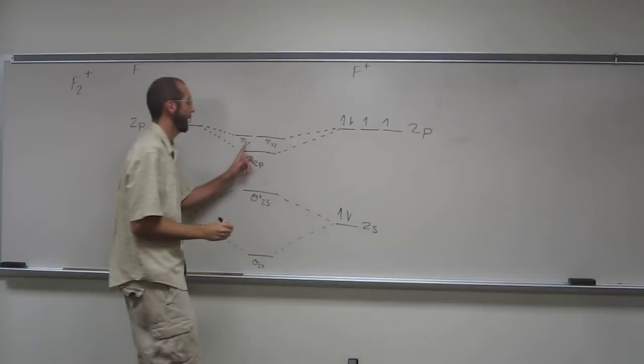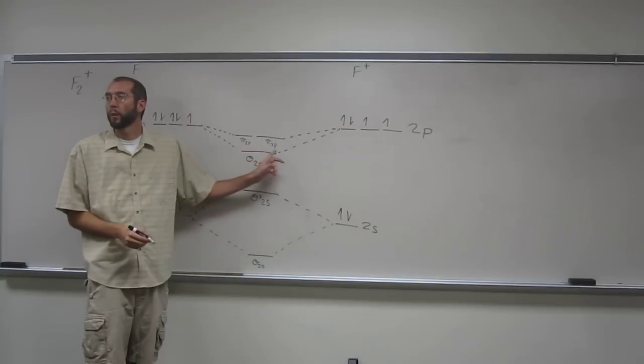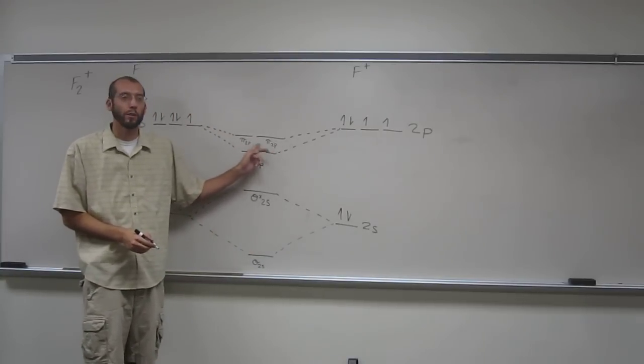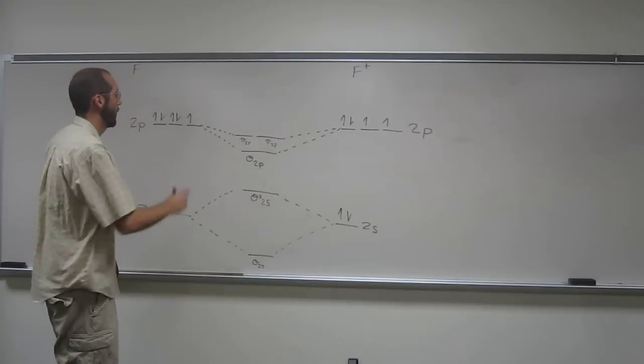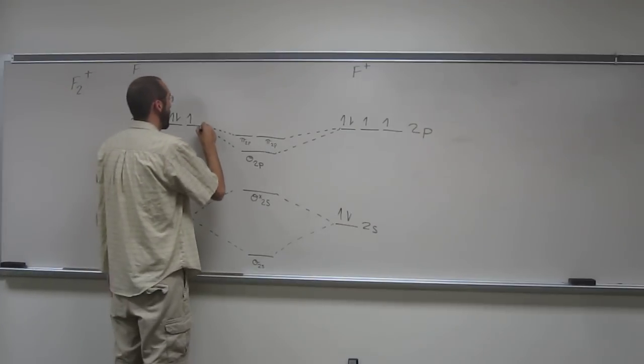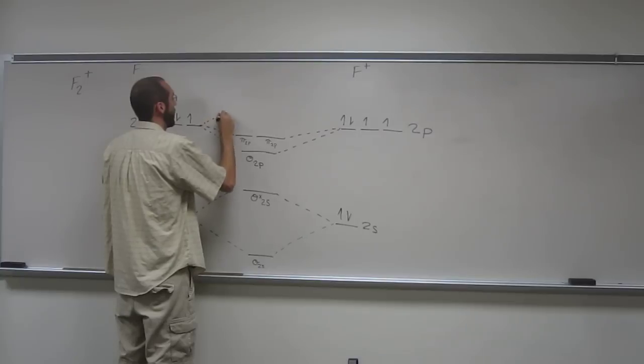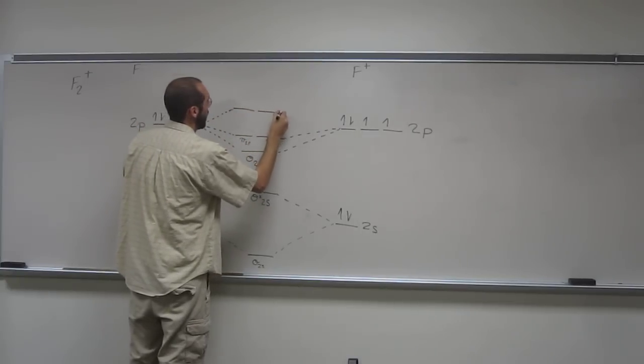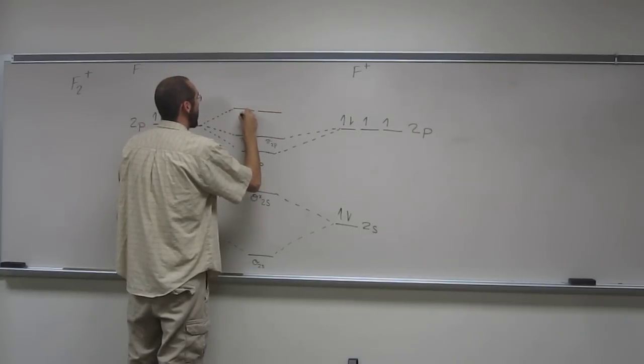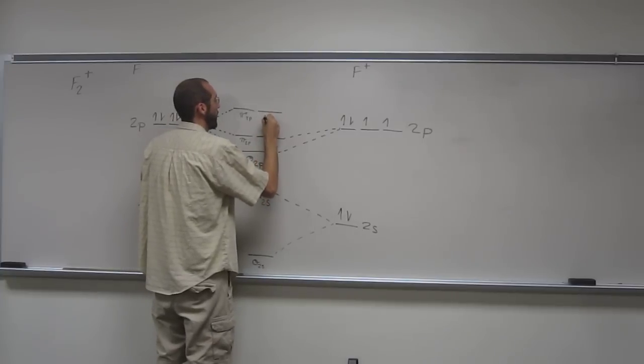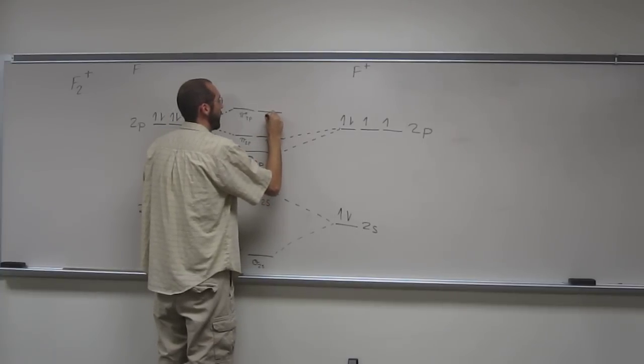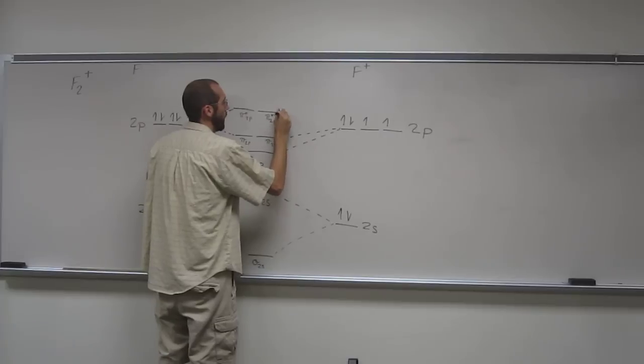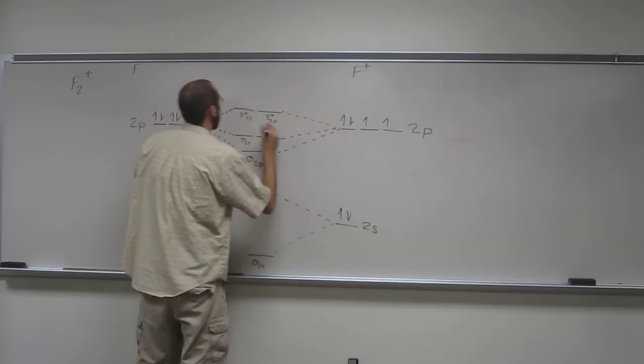And I think in your book, maybe this is where you were getting confused or whatever, but they label this just as one pi 2p. And then the anti-bonding orbitals. So this is going to be pi star 2p, like that.